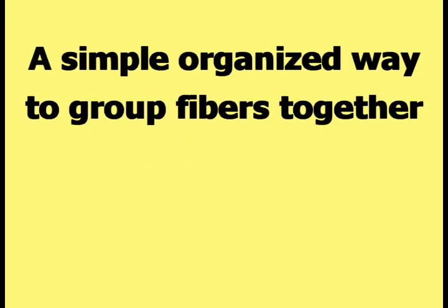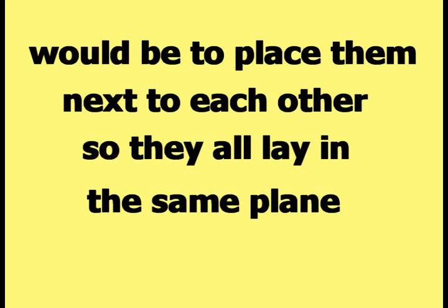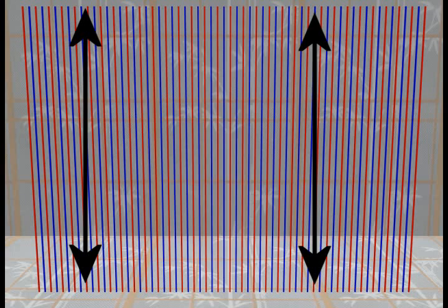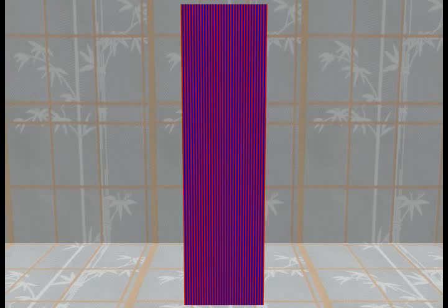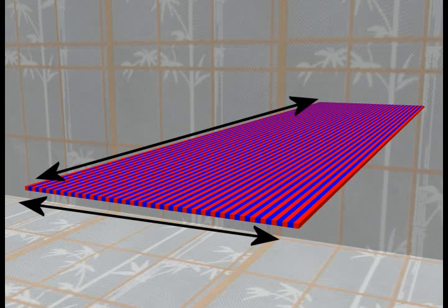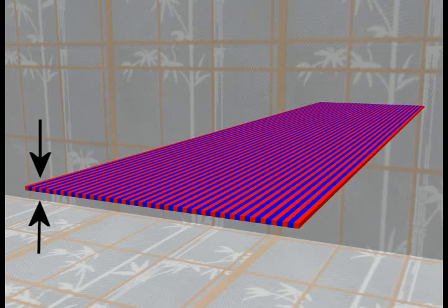A simple organized way to group fibers together would be to place them next to each other so they all lay in the same plane. Here is the thin rectangular box used to represent a fiber. This picture shows a small number of the fiber objects placed next to each other and oriented in the same direction. The fibers are then moved adjacent to each other, which gives them the appearance of one solid object. This solid object fits the definition of the word layer.